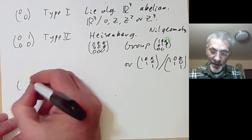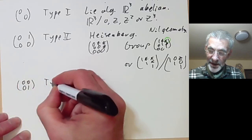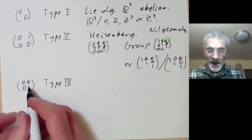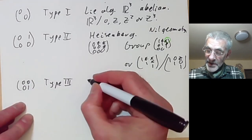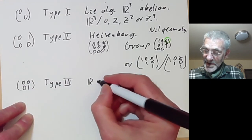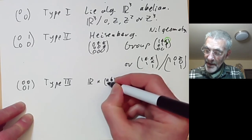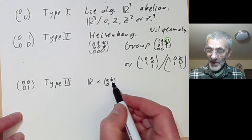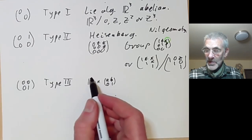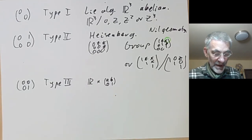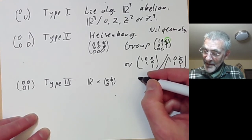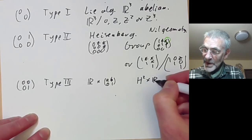The matrix (0, 1; 0, 0) [with a zero diagonal entry] gives Bianchi type 3, which is just the product of R with the ax+b group. There are two interesting groups because you could replace R by S¹. This corresponds, in Thurston's geometry, to three-manifolds modelled on the hyperbolic plane times the reals.